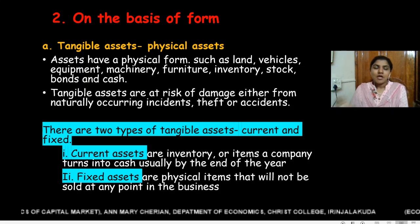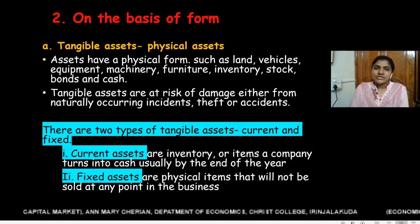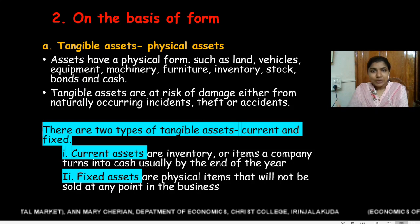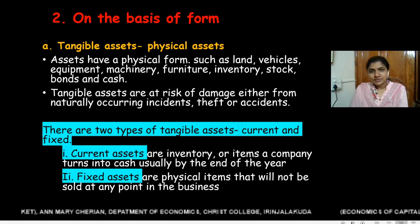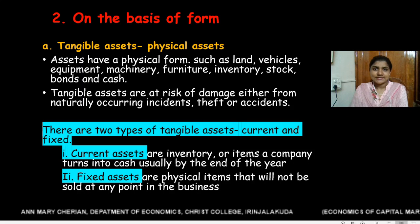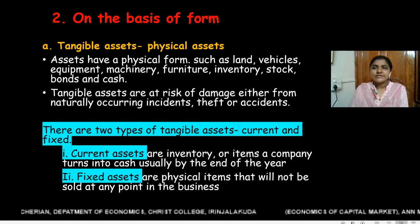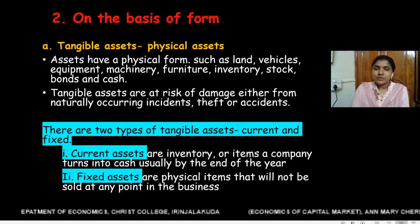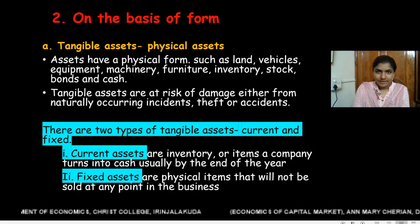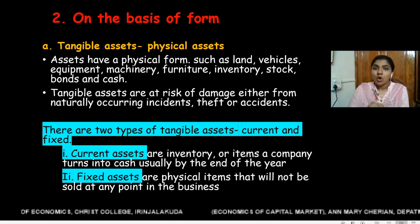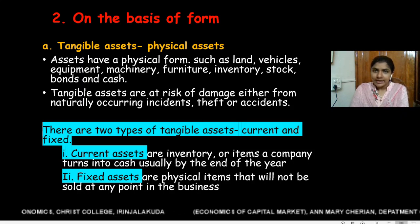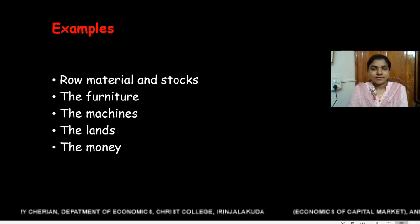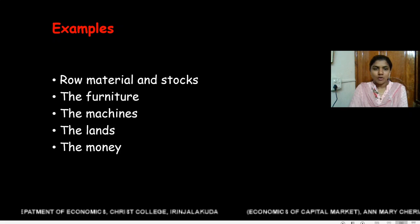Whereas the furnitures, machineries, and equipment in the cotton textile industry are fixed assets, because the company will never sell these assets — they are very useful for running the business. So current assets will be sold by the company, and fixed assets will not be sold at any point of time. Other examples of tangible assets are raw materials and stocks, furnitures, machineries, land, money, etc.